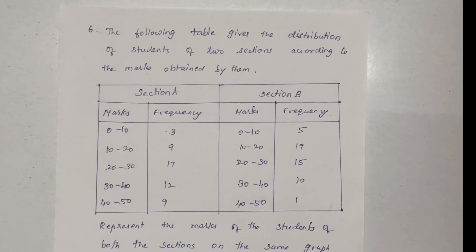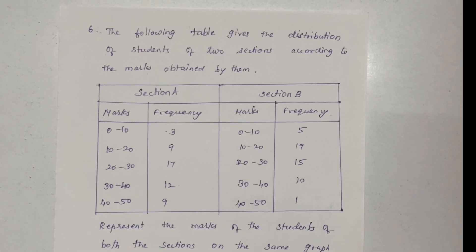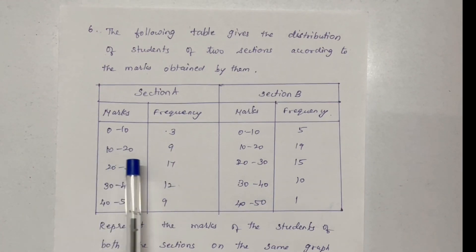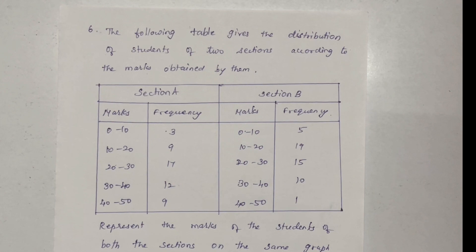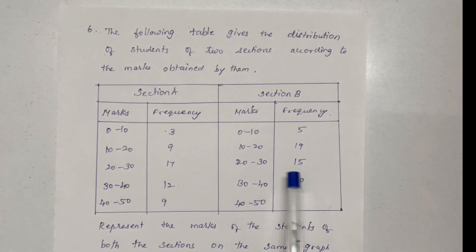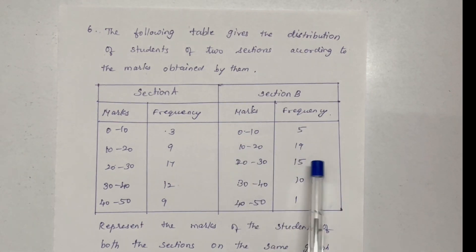The following table gives the distribution of students of two sections according to the marks obtained by them. Section A: 0 to 10 marks, 3 members; 10 to 20 marks, 9 students; 40 to 50 range, 9 students. This is Section B — limits and frequency.